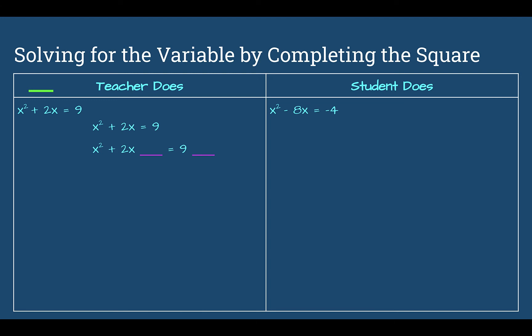Half of 2 is 1, and 1 to the second power is 1. Because we added 1 to one side, we add it to the other as well. Now factor the left side: x squared plus 2x plus 1 factors into x plus 1 times x plus 1. On the right, combine 9 plus 1 to get 10. So x plus 1 times x plus 1 is x plus 1 squared, which equals 10.